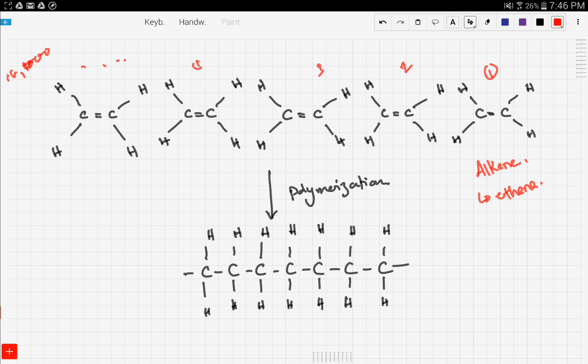So these little units right there are called the monomer and you're stacking thousands of monomers in order to get the polymer right there. This continues on and on.